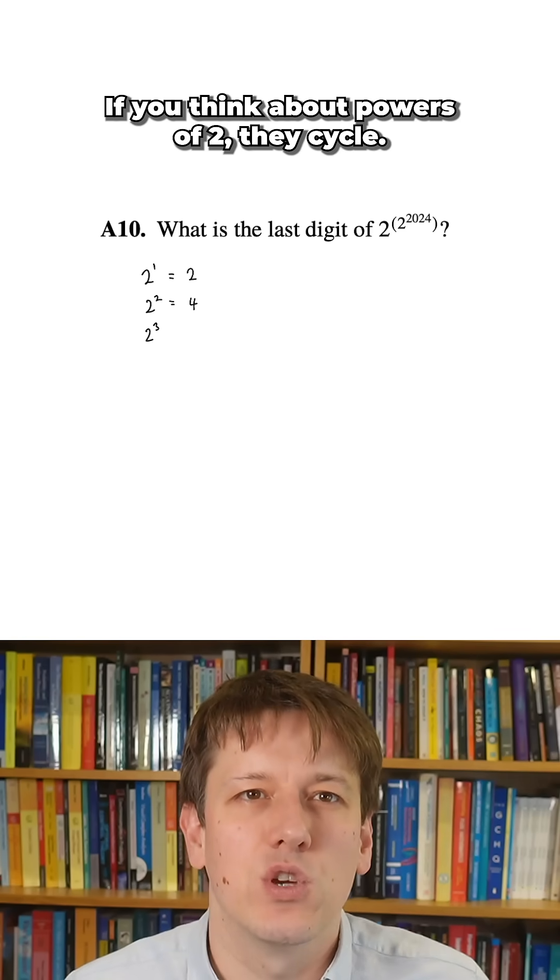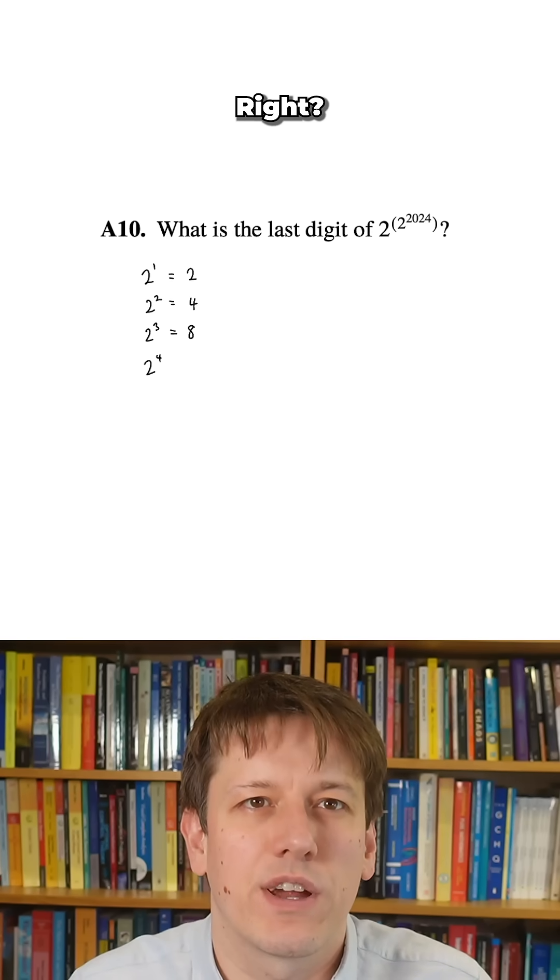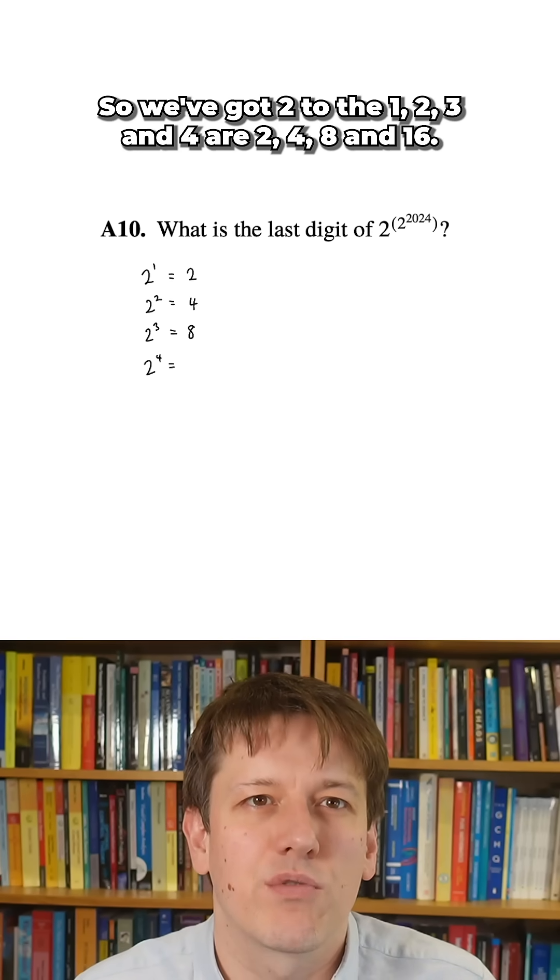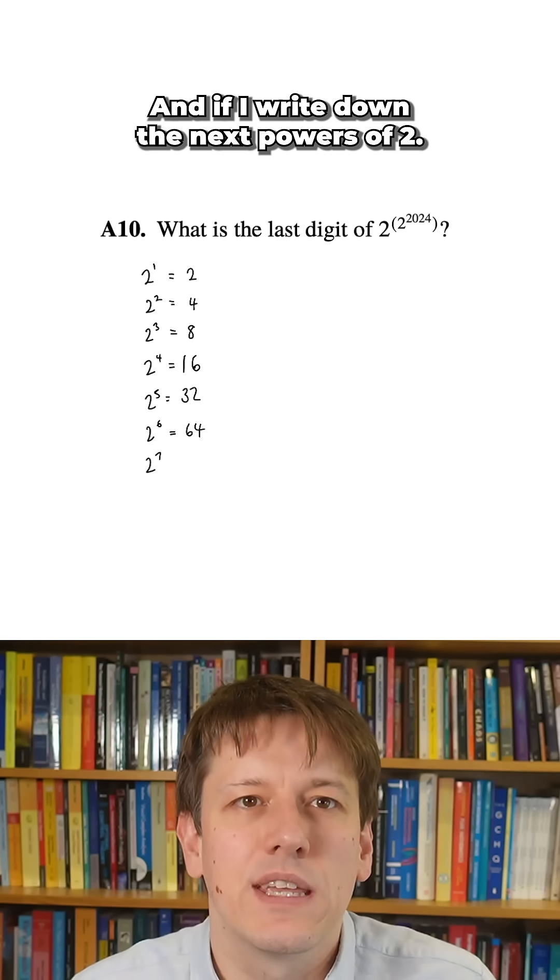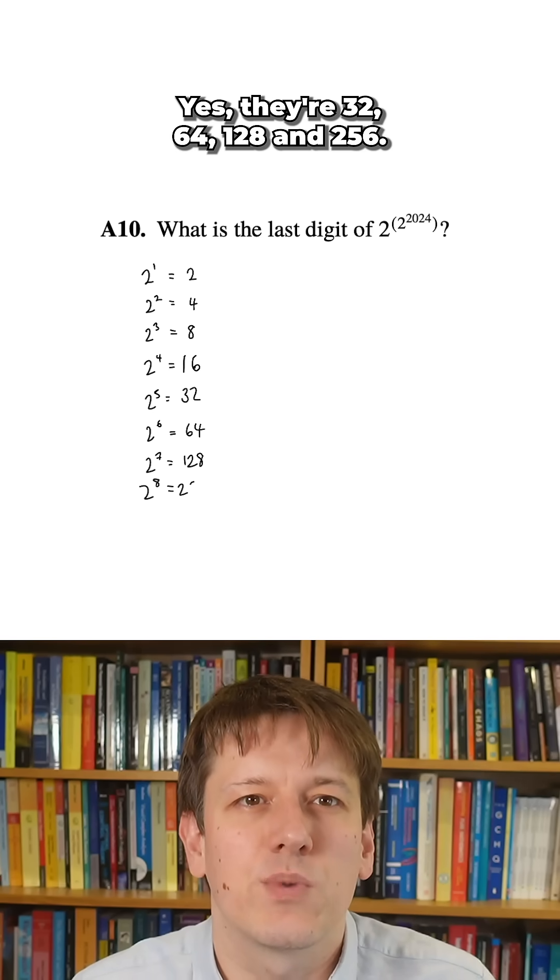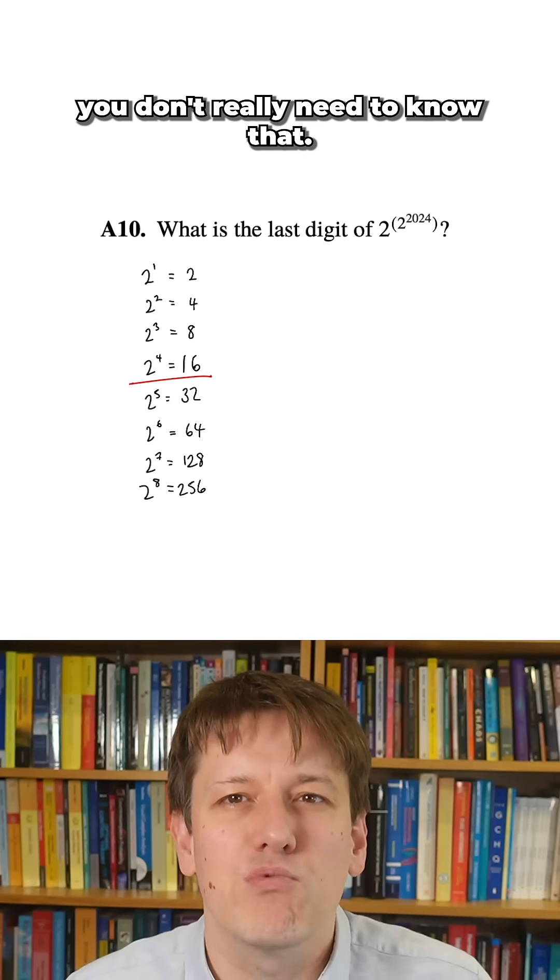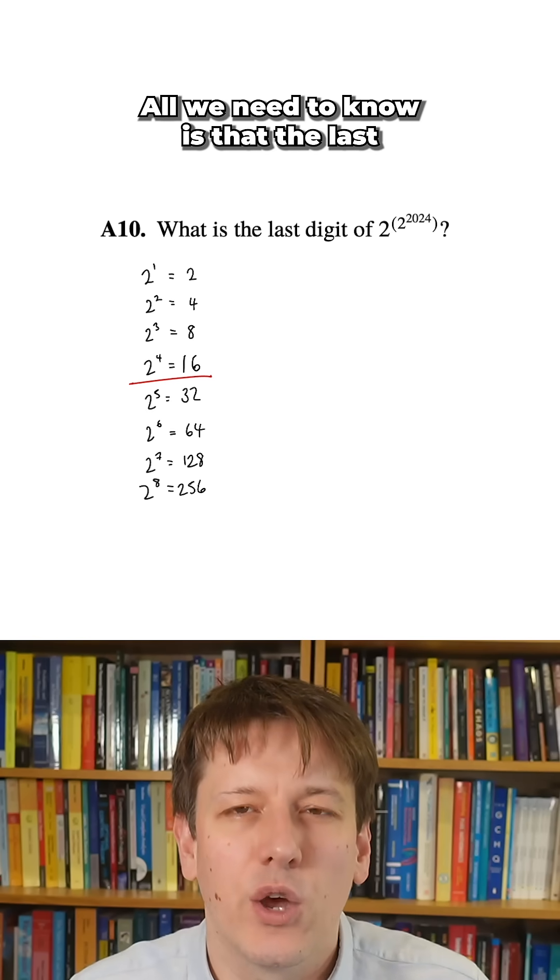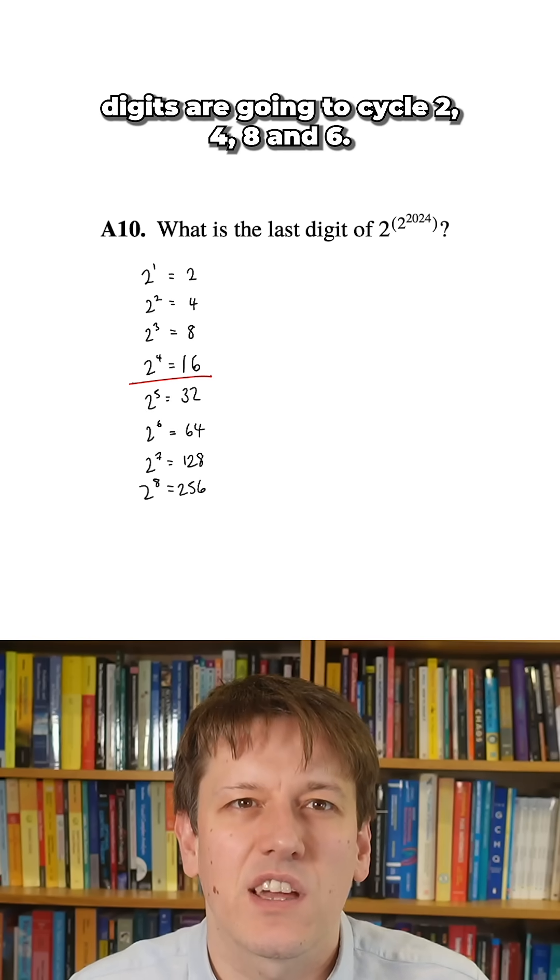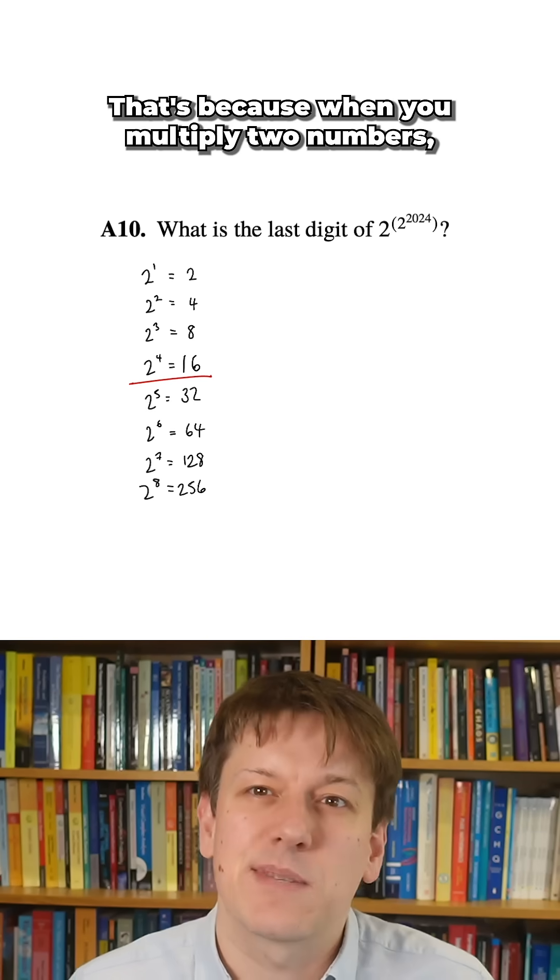If you think about powers of two, they cycle, right? So we've got two to the one, two, three, and four are 2, 4, 8, and 16. And if I write down the next powers of two, yes they're 32, 64, 128, and 256. But the point is for last digit problems you don't really need to know that. All we need to know is that the last digits are going to cycle 2, 4, 8, and 6.